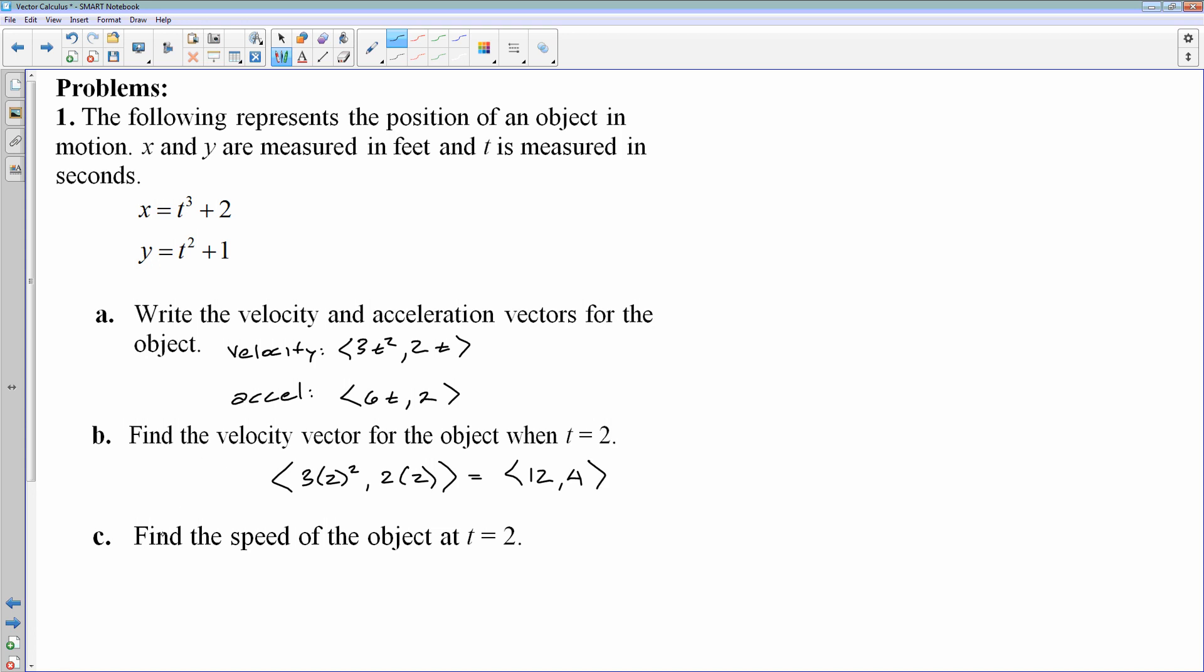So the speed, remember, speed is the magnitude of velocity. Now, in part b, we've already found the velocity vector when t is 2. If I want speed, then that's going to be the magnitude of my velocity at 2. The speed is going to be the square root of, and then you simply square each component.